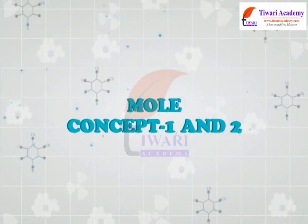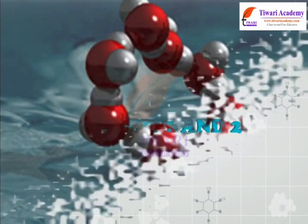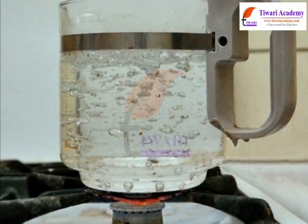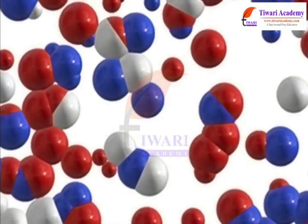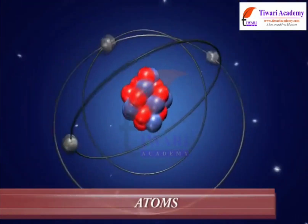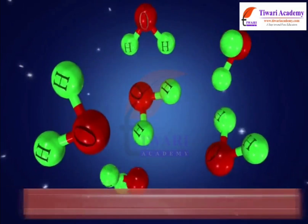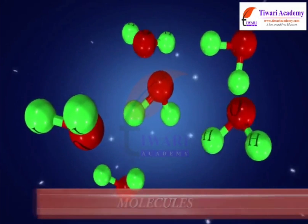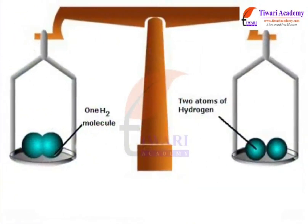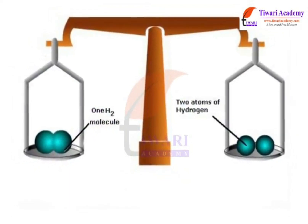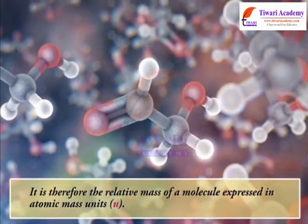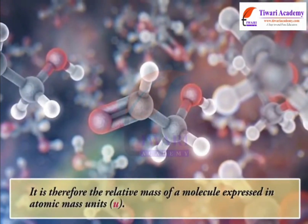Mole Concept. Dear students, a mole is a unit of measurement used in chemistry to express amounts of a chemical substance, defined as the amount of any substance that contains as many elementary entities — for example, atoms or molecules. The molecular mass of a substance is the sum of the atomic masses of all the atoms in a molecule of the substance. It is therefore the relative mass of a molecule expressed in atomic mass units (u).